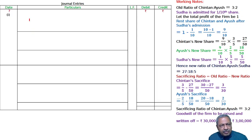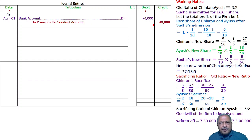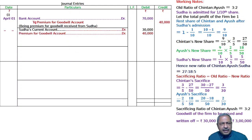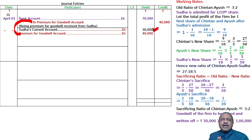Cash account or bank account is debited — either is acceptable. For premium for goodwill, the amount is actually 40,000 — the 70,000 mentioned earlier was a mistake. Receipt from Shudha: we received 40,000 from Shudha. Then, premium for goodwill account is debited. The amount not yet debited — Shudha's current account is debited. Shudha's total goodwill premium share is 70,000; 40,000 was brought in cash and 30,000 was not.